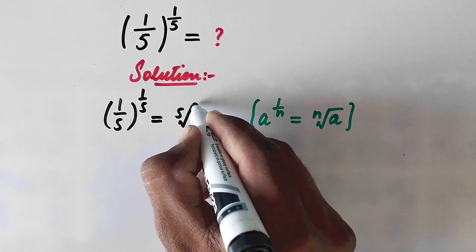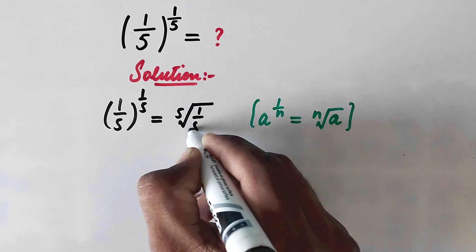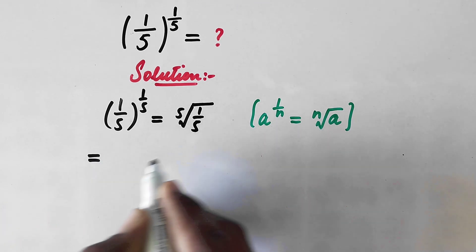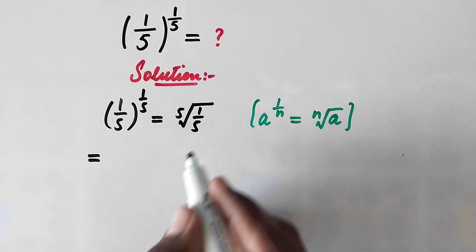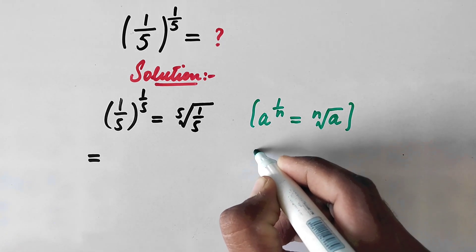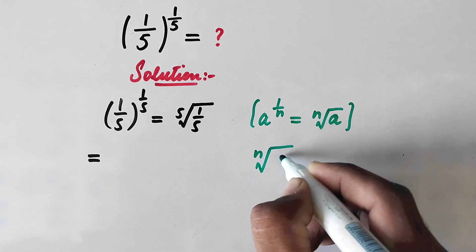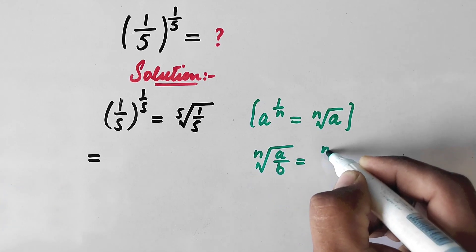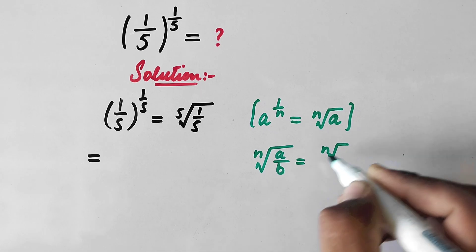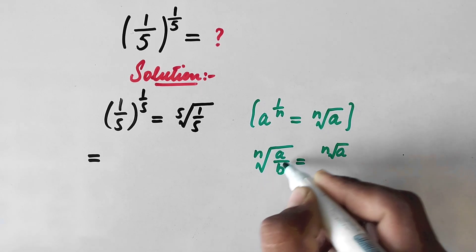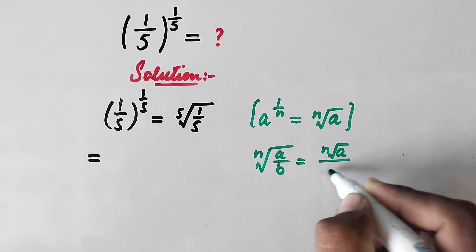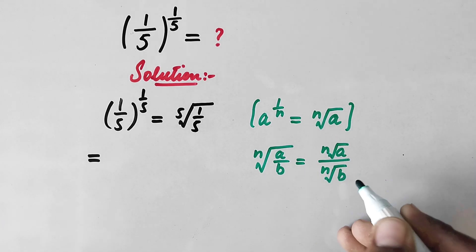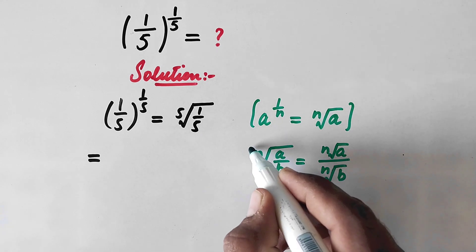In the next step, we apply another property: the nth root of (a/b) equals the nth root of a divided by the nth root of b. We use this to isolate the fraction, separating the numerator and denominator under their own radicals.